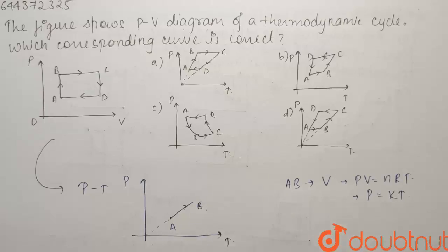The next process is my process BC in which the pressure is constant. As the pressure is constant and the volume is increasing, V will be directly proportional to temperature from PV equals to NRT. So the temperature is going to increase as well.